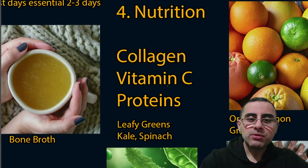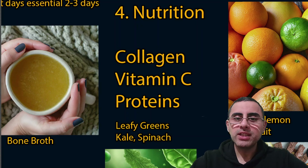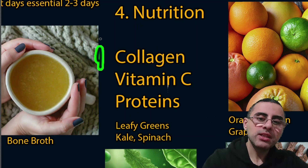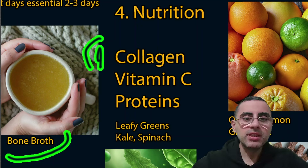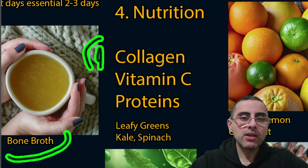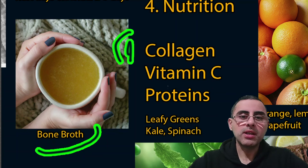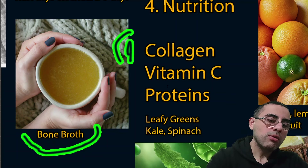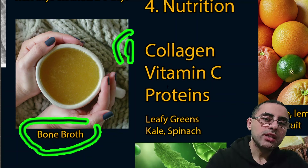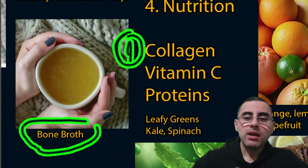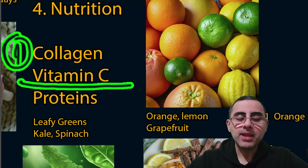Another important part is nutrition. Three components are key for skin elasticity and preventing sagging: first is collagen, second is vitamin C, and third is protein. Bone broth is considered very effective for naturally obtaining collagen, because when you boil bones you get collagen, amino acids, and proteins — a full composition. So bone broth is considered the top choice for collagen intake.